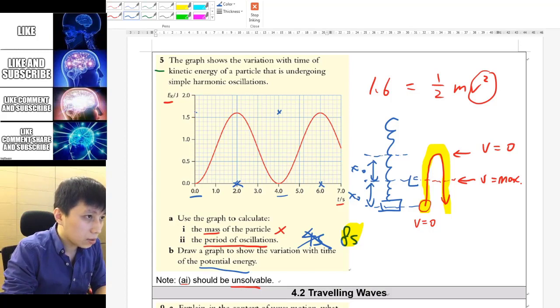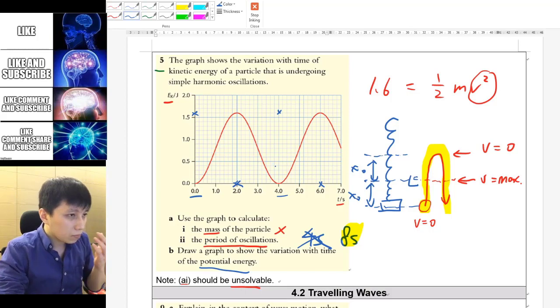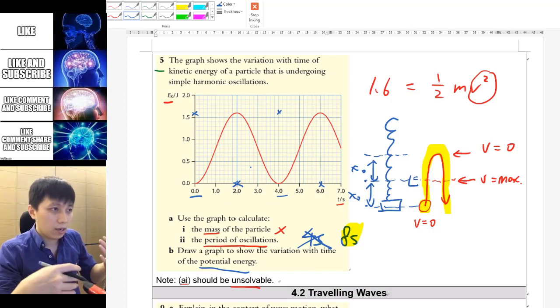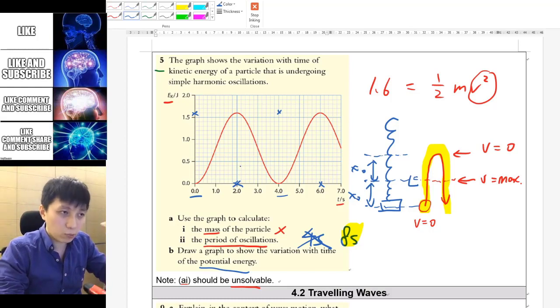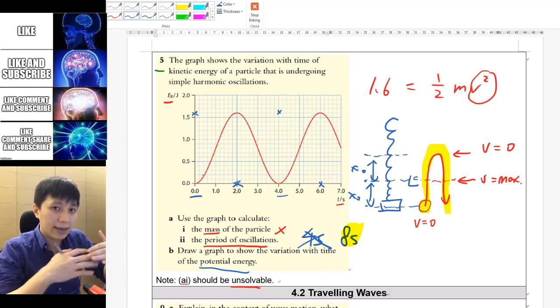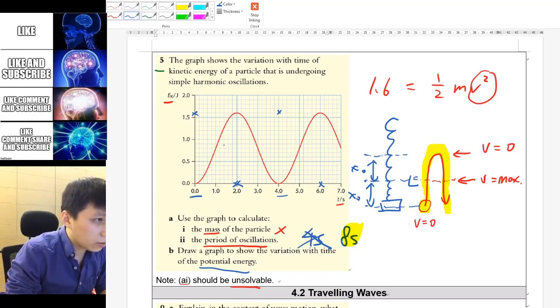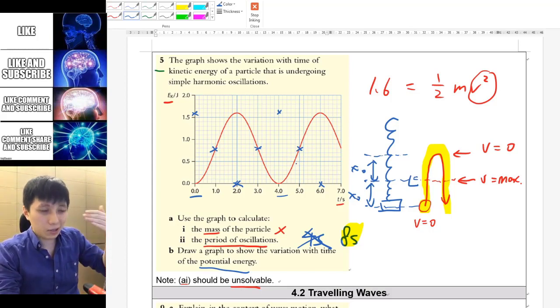When KE is zero then PE will be at 1.6. So before you draw directly, I would suggest you anchor some points so you can label them and make sure you pass through them later on. Other than these four, you could also look at the half value because potential converts to KE and KE converts back to potential. And if total is 1.6 that means the line will intersect at the half value, so that would be 0.8. So with that then we should be good to go.